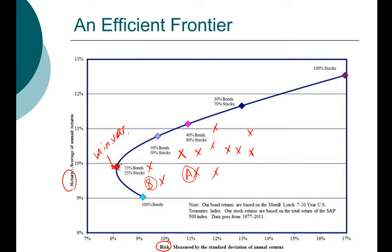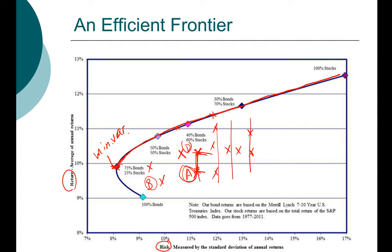Once we have the minimum variance portfolio, we look at portfolios with different returns. For example, portfolio A and portfolio D have the same risk, but you would prefer portfolio D because it has a higher return. So from the minimum variance portfolio, you want to choose portfolios as high as possible on the feasible set. This curve connects all portfolios with the highest possible return at any given level of risk. Starting from the minimum variance portfolio and going upward along the boundary of the feasible set — this is what we call the efficient frontier.